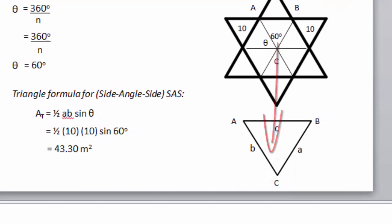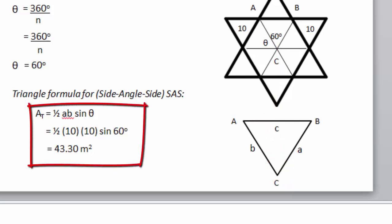We are going to solve that based on the formula given. We have now 1 half a times b, or 1 half 10 times 10, times sine of the angle theta, which is 60 degrees. Therefore, we get the answer of 43.3 meters squared.